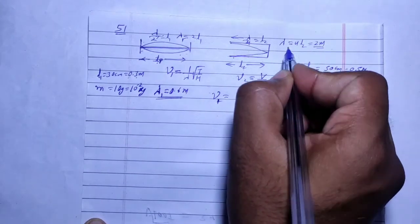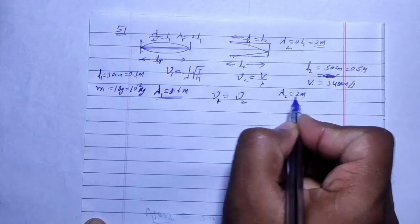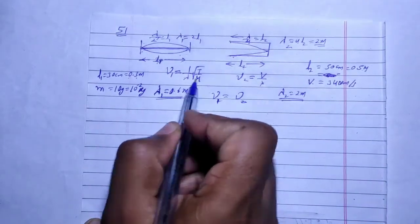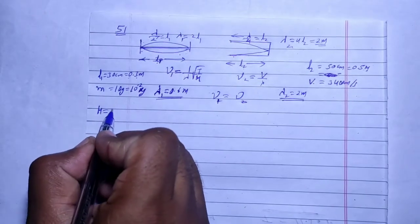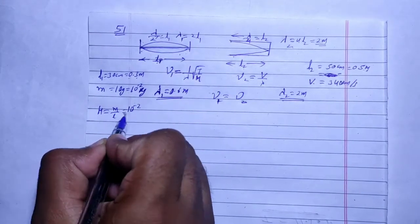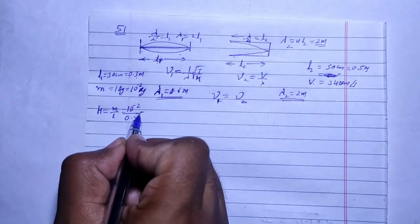Lambda 2 is 2 meters. Now we need to find tension. Mass per unit length is mass upon length. Mass is 10 to the power minus 2, and length is 0.3, so this gives us 1 by 30.